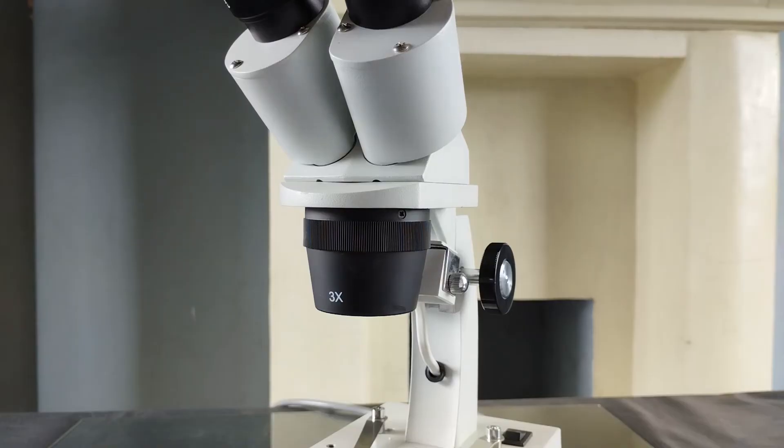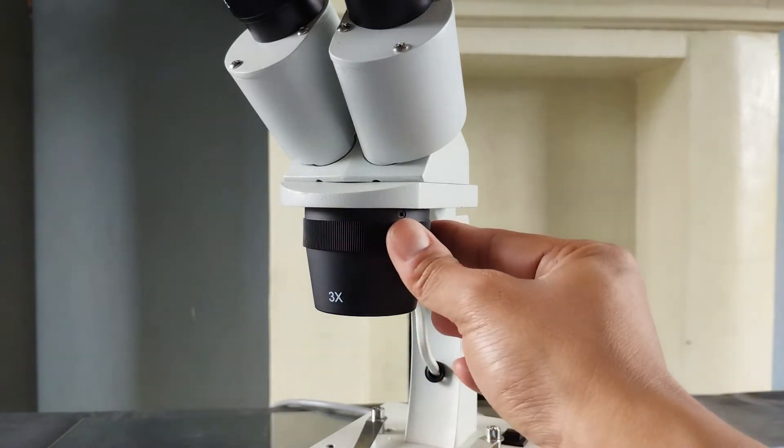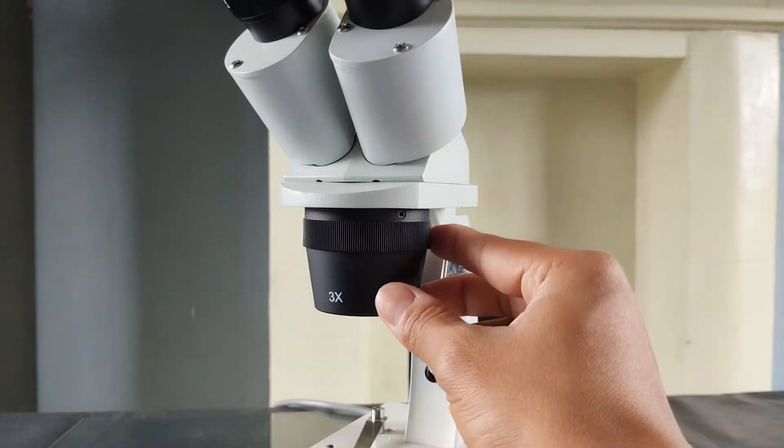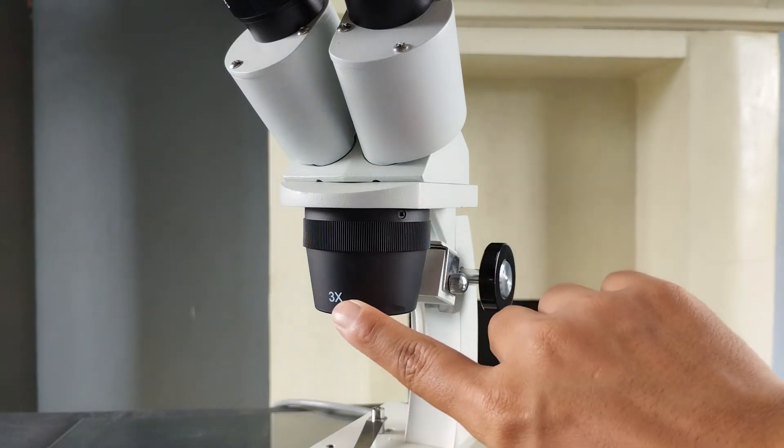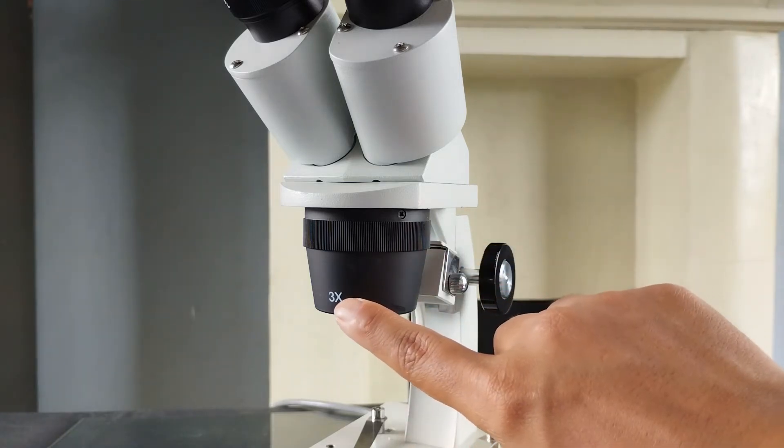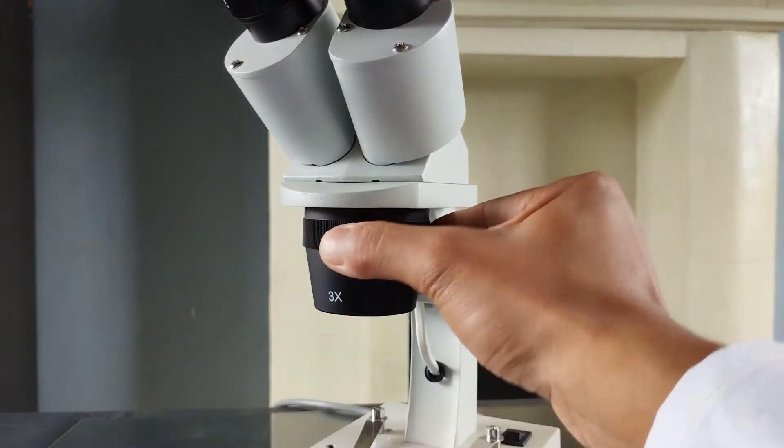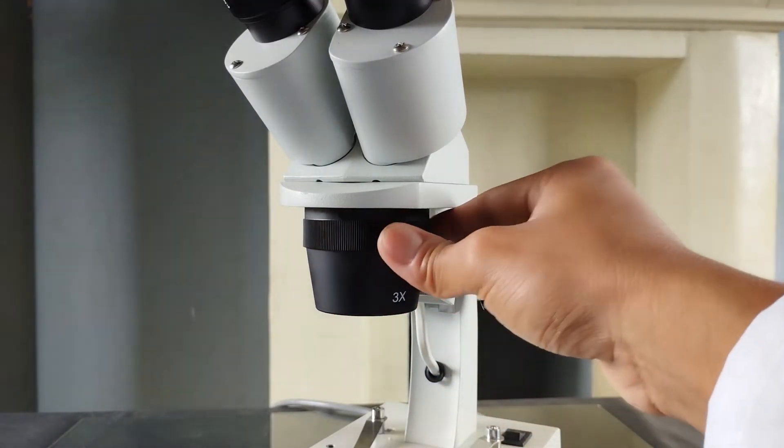Now, select the objective lens required for examining the specimen. In a stereo microscope, unlike in a compound light microscope, the objective lenses are collectively housed within a broad cylindrical tube that has the objective magnifications engraved on it. The tube is rotated until the required magnification clicks into position.